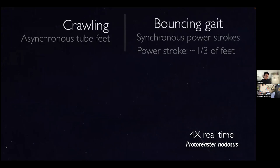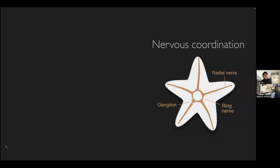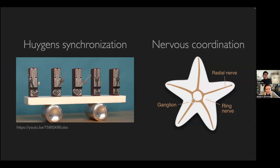We saw about a third of the feet stepping at similar times during a power stroke or step. One way this can happen is through their very simple nervous system — they don't have a brain, they have a ring nerve, and at the base of each arm there's a ganglion connected to a radial nerve. This is what we categorize as their main nervous system, where they integrate information. But since there are so many feet and such a simple nervous system, it's conceivable they coordinate using mechanical coupling, also known as Huygens synchronization.